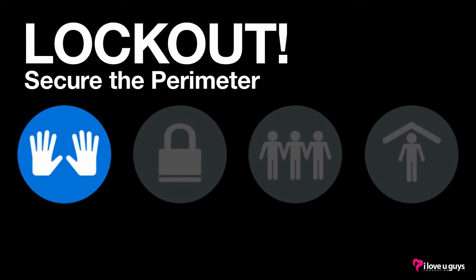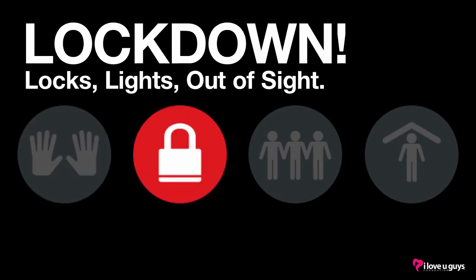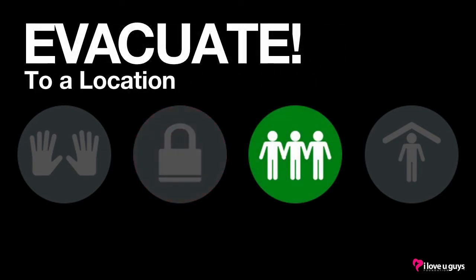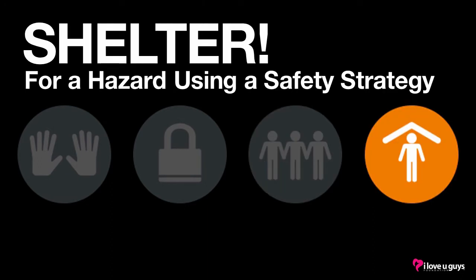For Lockout, the following message will be repeated: Lockout, secure the perimeter. For Lockdown, the following message will be repeated: Lockdown, locks lights out of sight. For Evacuate, the following message will be repeated: Evacuate, to the stated location. For Shelter, the following message will be repeated: Shelter, for hazard using method.